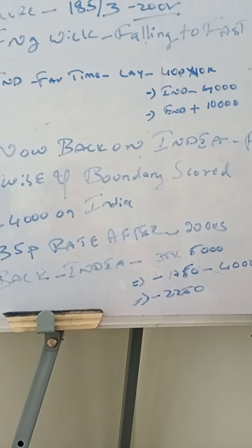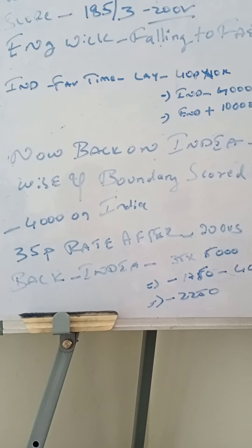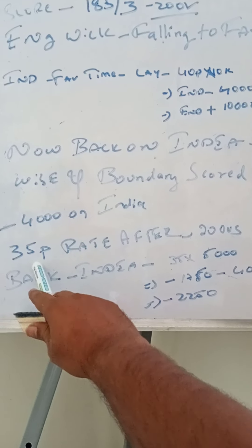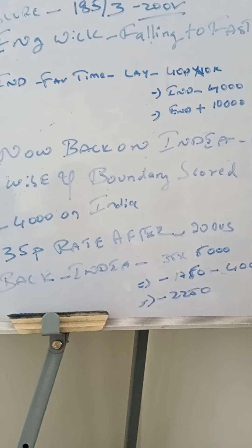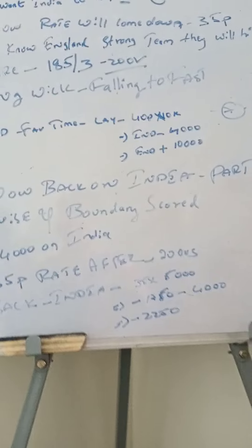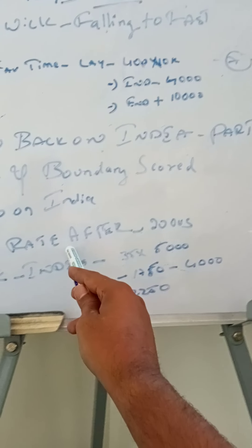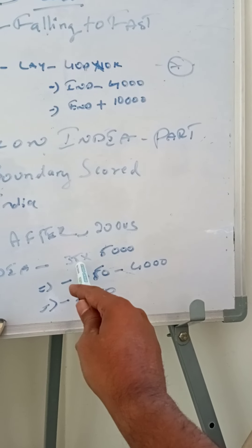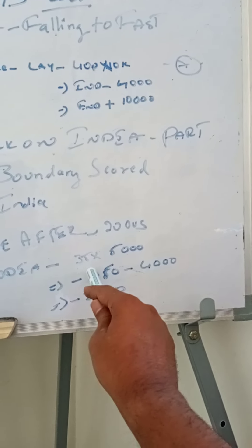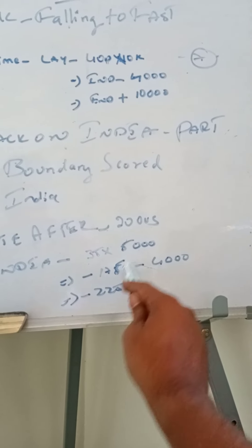I can't believe that the rate of $35 and $33 has been in India. I think it's a little bit of a risk, but it's a lot of money because it's safe. So we are going to start with the 35% rate. 35% is $1,750.